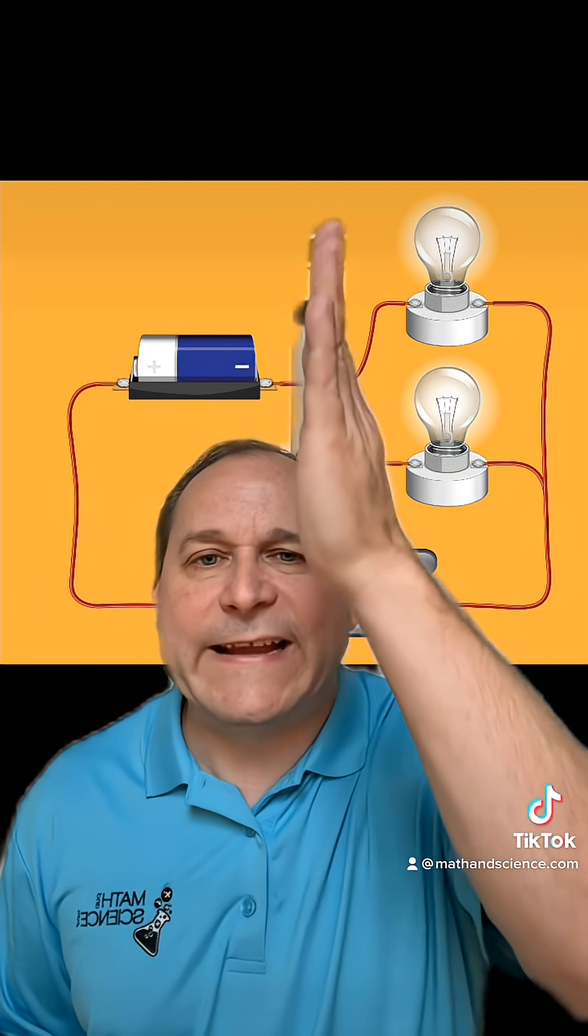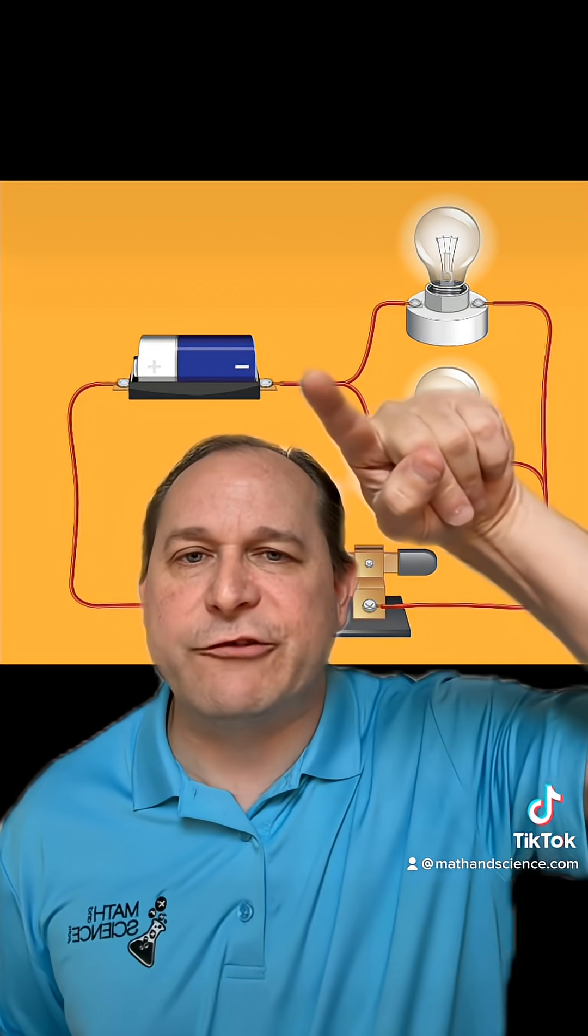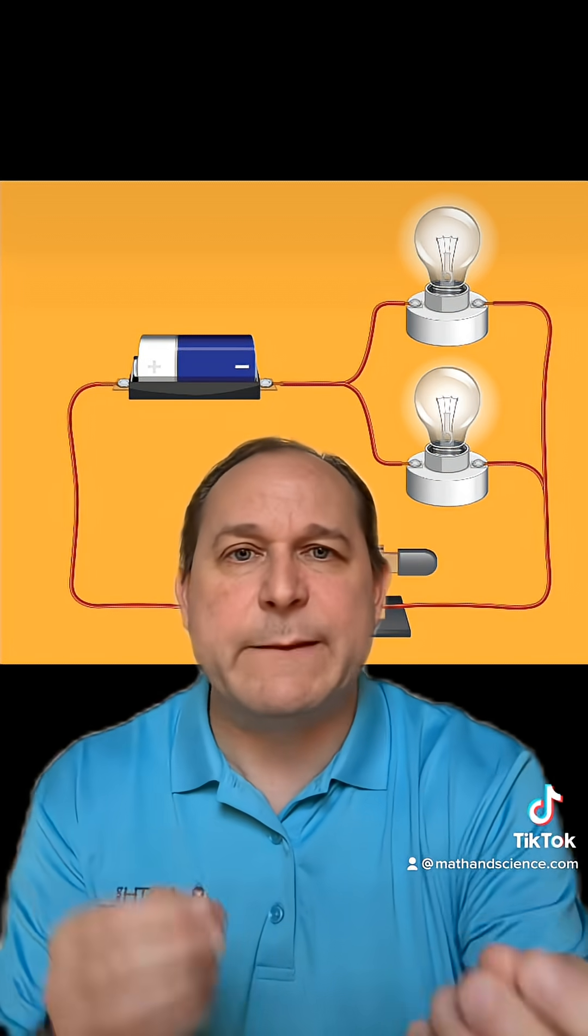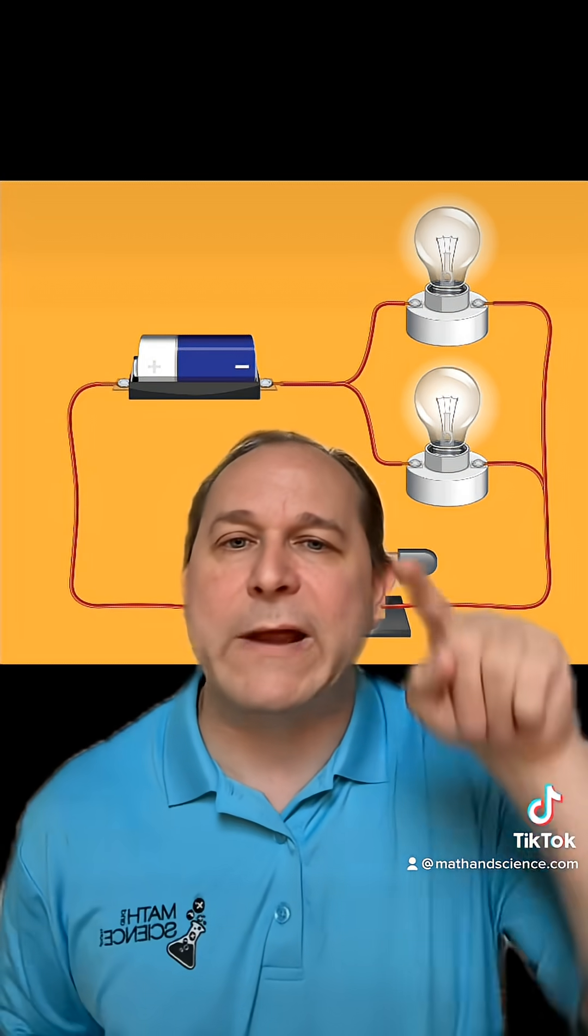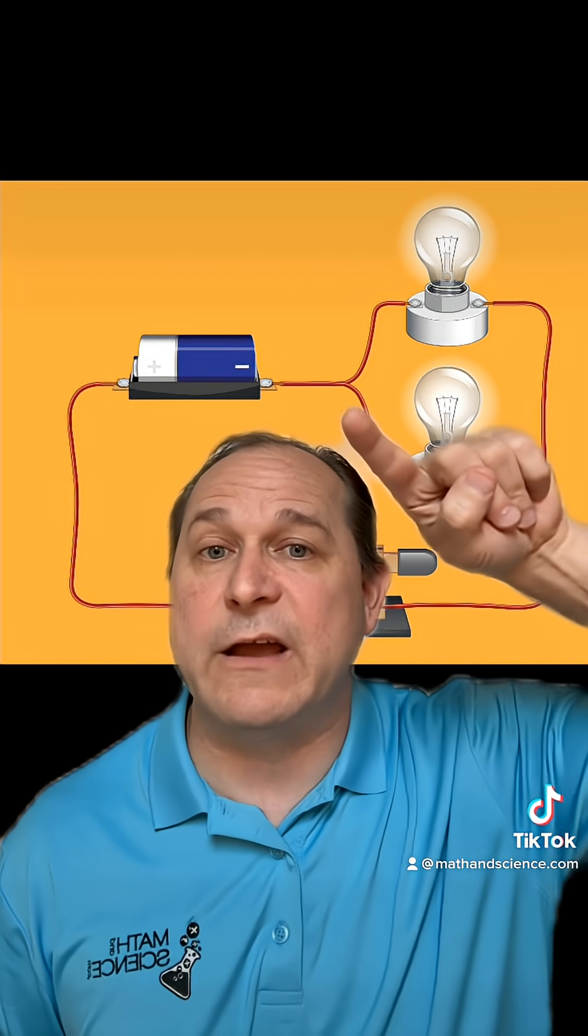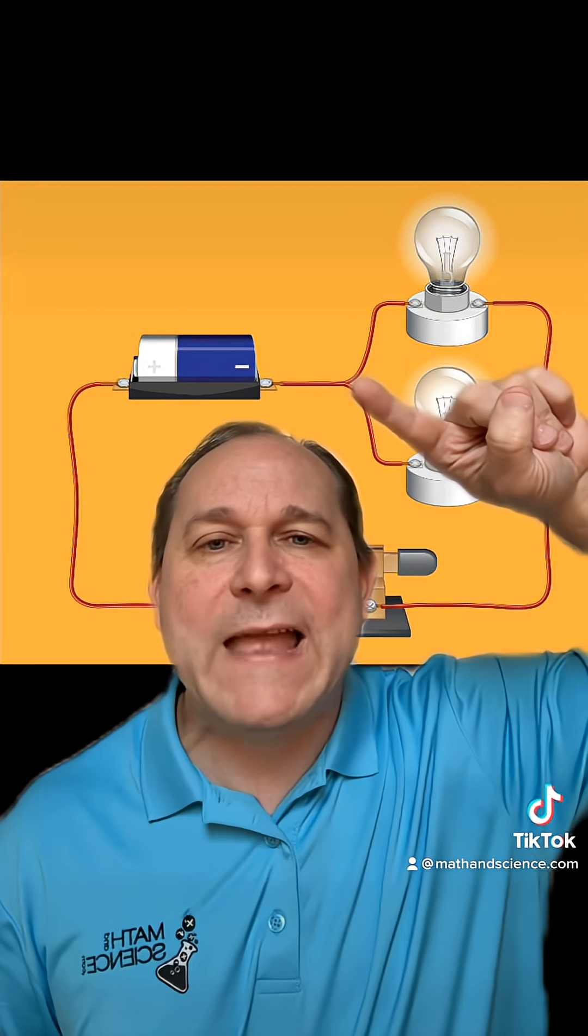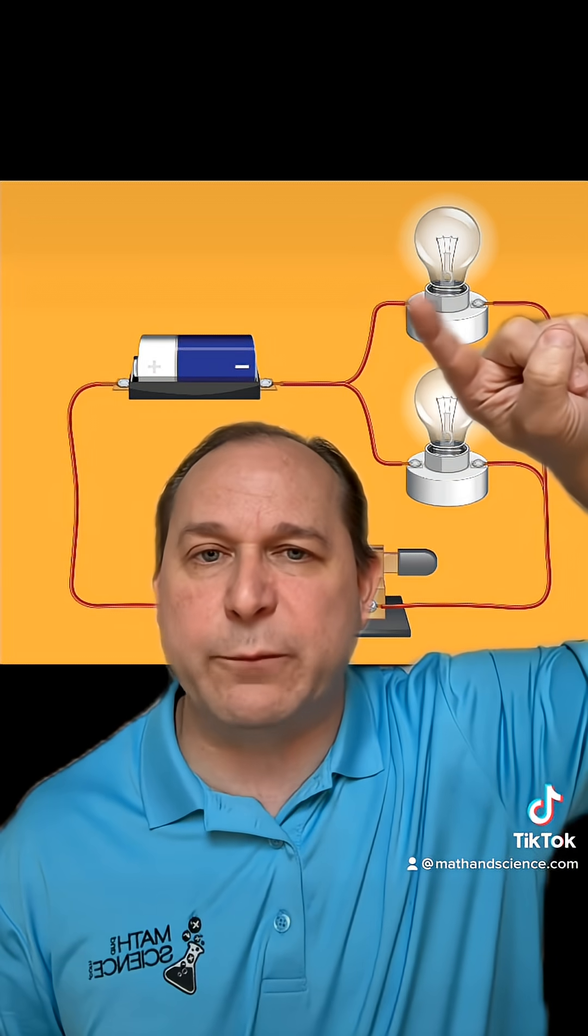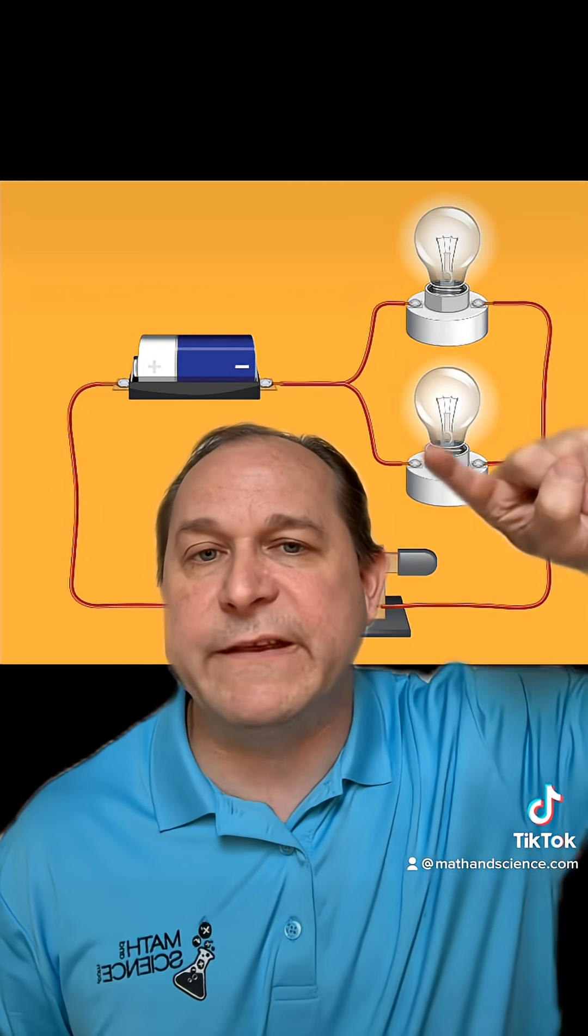So if you could slice this wire right here and look at the electrons flowing through it, if you could see them they would be rushing past you in a chain reaction sort of way, and so the electric current gets to this junction spot. And when that happens, part of the current goes this way and part of the current goes this way.